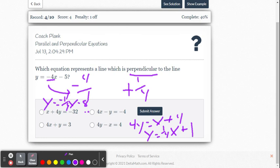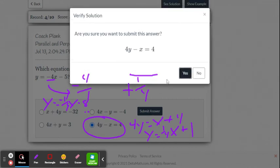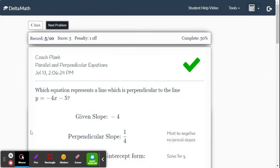We have a slope that is opposite reciprocal. So it's the positive 1 fourth. And this is going to be our answer. Let's double check and make sure we get the green check mark. And there you go.